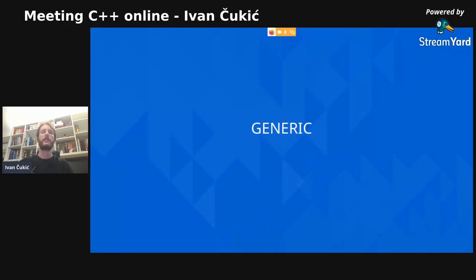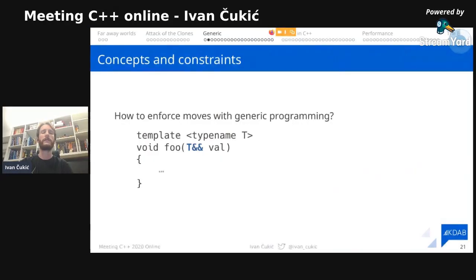There is a diversion worth making: the `T&&` we've learned to love in C++11 doesn't really work well with templates. When you write a template function with parameter `T&&`, most newcomers would expect it to be an rvalue reference, but it's actually a completely different beast — a forwarding reference. So how can we write generic functions that have normal rvalue references rather than forwarding references?